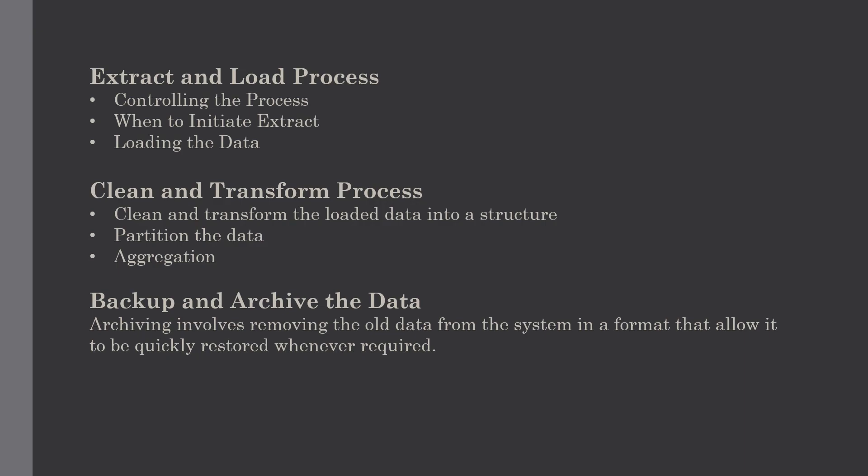In this we have to consider three points clearly. The first one is controlling the process. The controlling process involves determining when to start the data extraction and checking the consistency of the data. If the data looks good, the controlling process ensures that the tools, logic modules, and programs are executed in the correct sequence and at the correct time. It is a very important process.